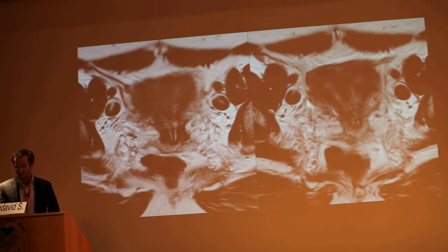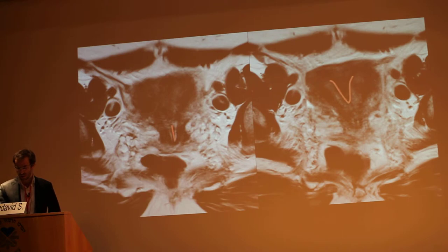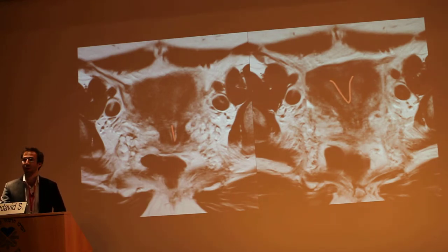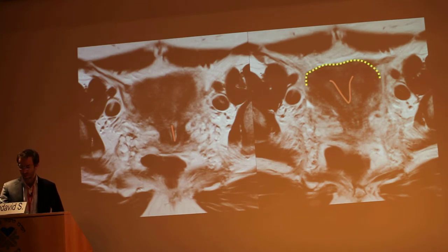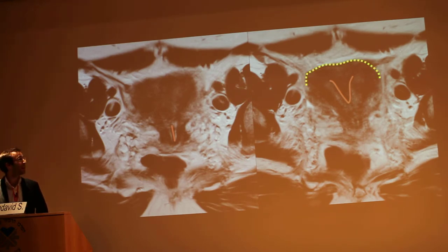Under T2-weighted images parallel to the cavity, the septum in the cervix is visible, as well as the isthmic communication and the septum in the corporeal region. And the most important point is that the frontal contour is convex.